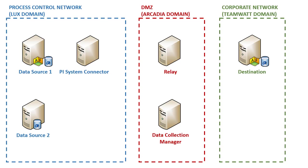In the Process Control Network, we have two data sources with AF Server and PI Data Archive installed on it. We will install the PI System Connector in the Process Control Network. In the DMZ domain, we will install Relay and PI Data Connection Manager. In the Corporate Network, we have the Destination AF Server and PI Data Archive.